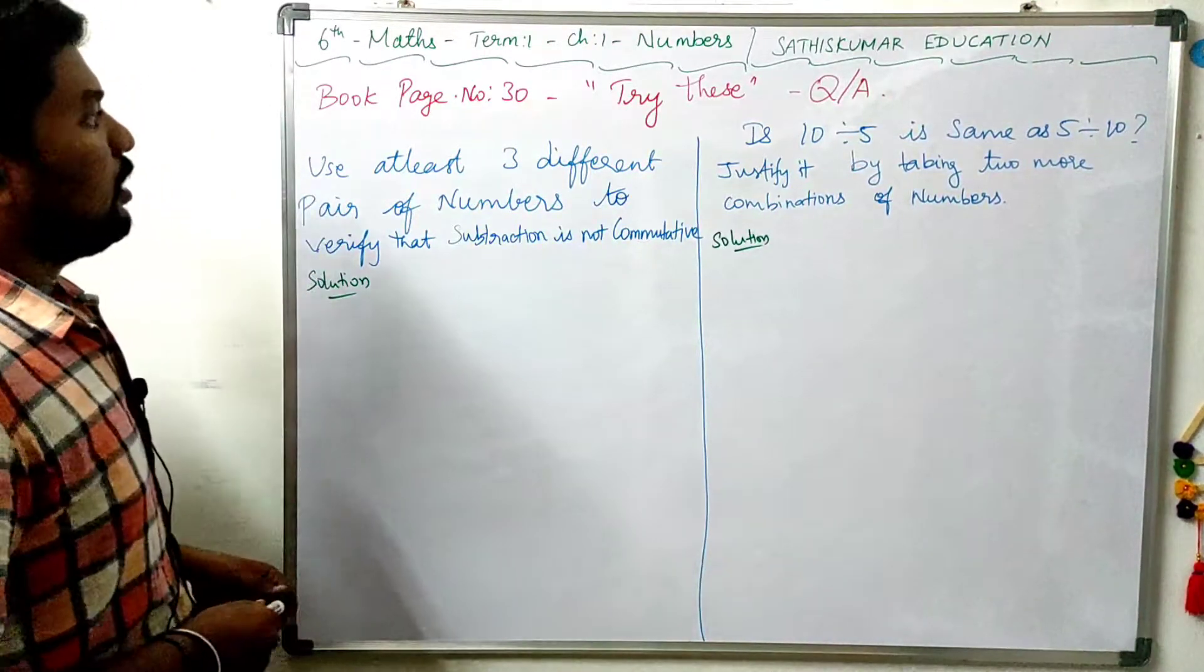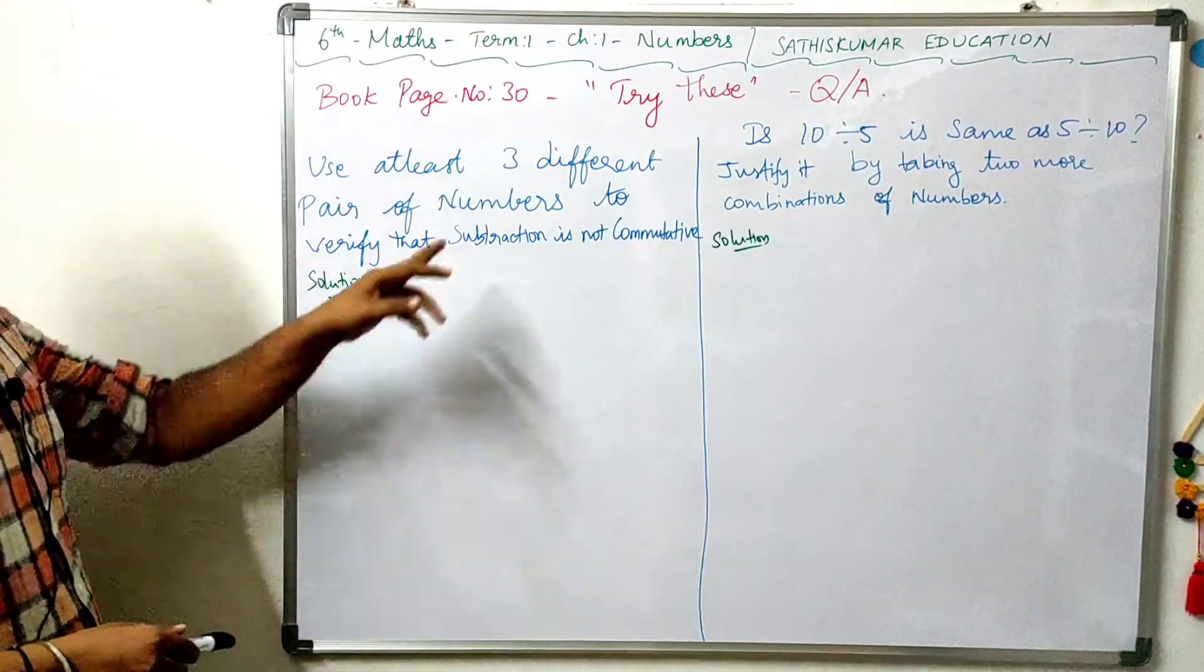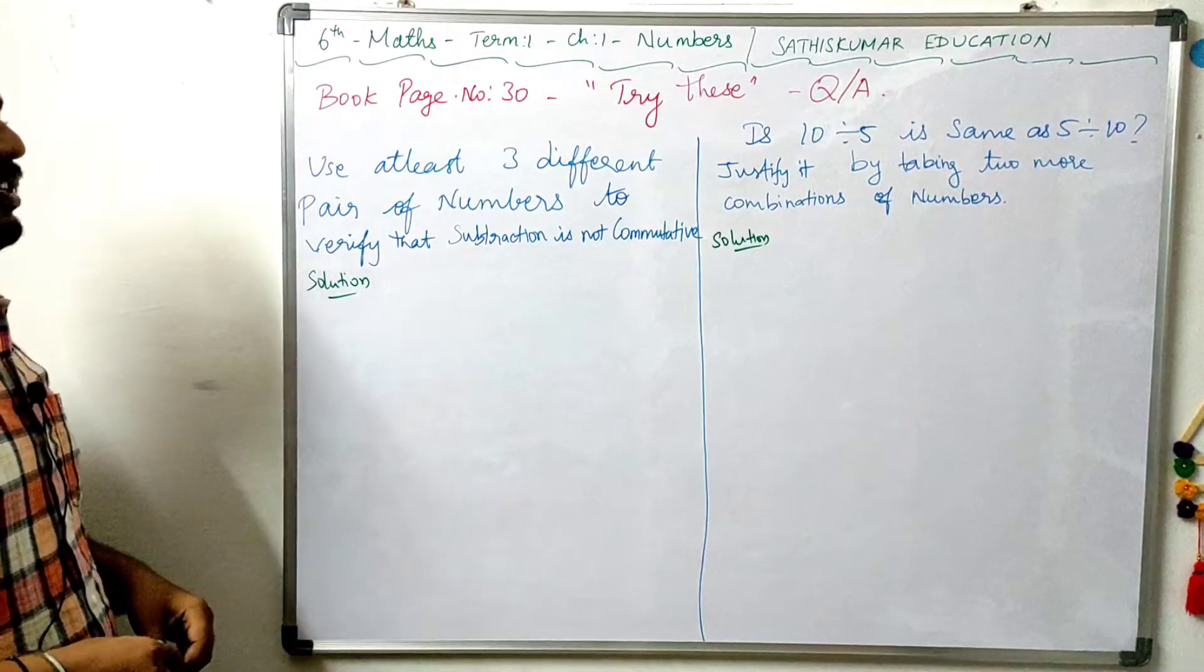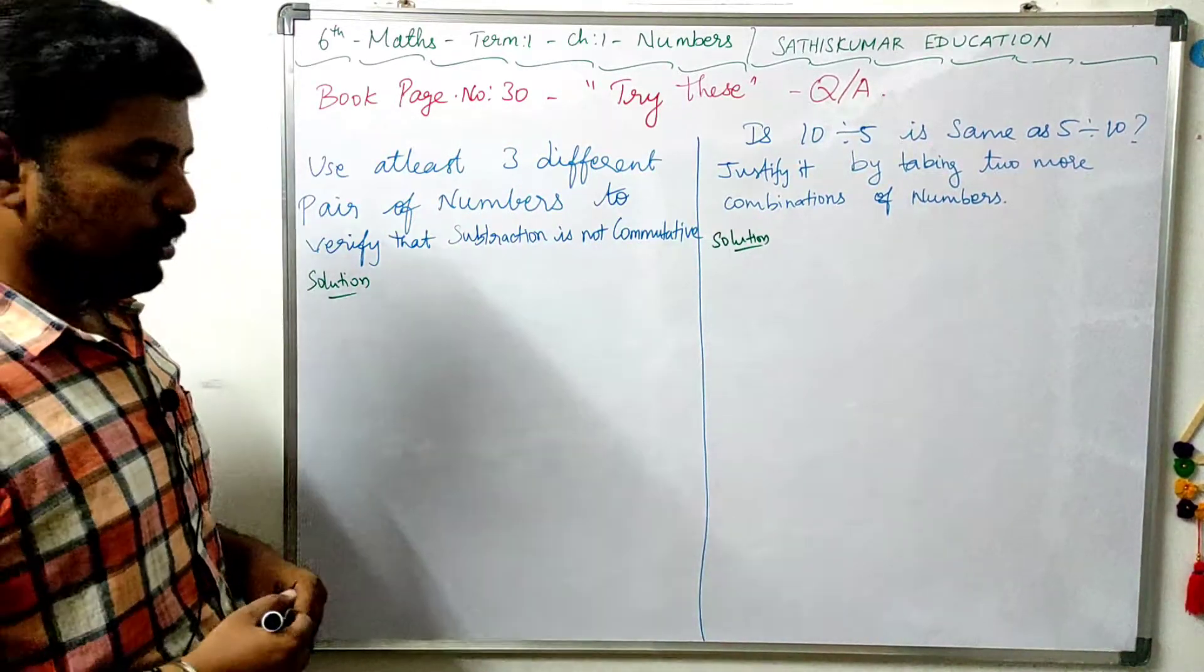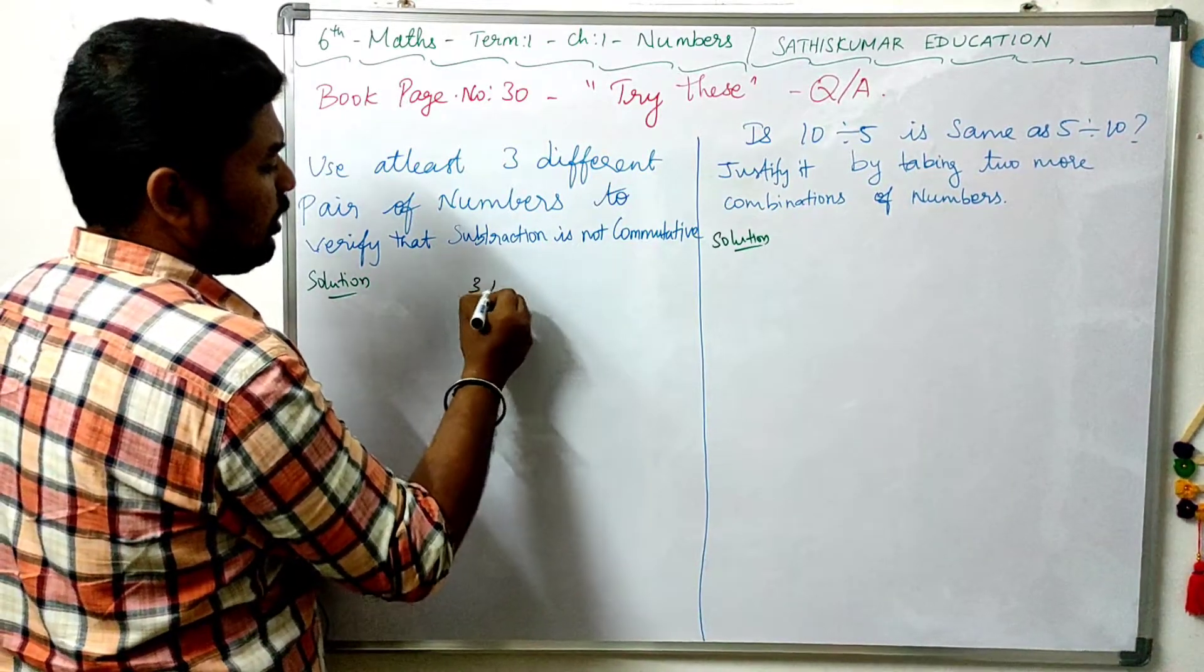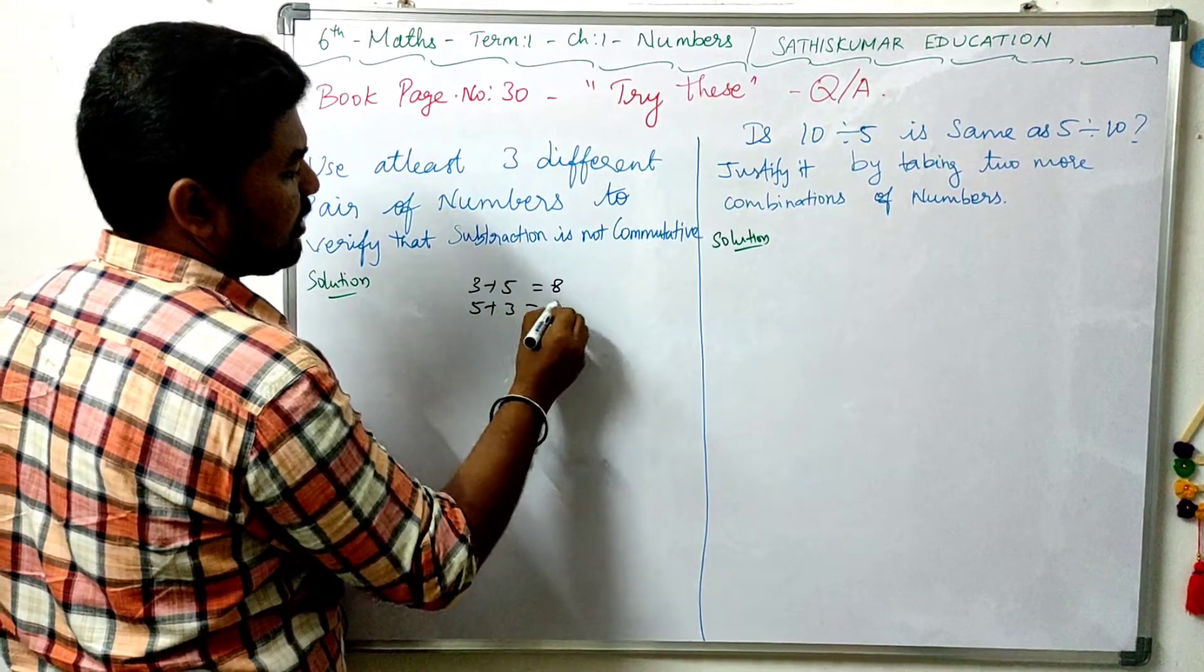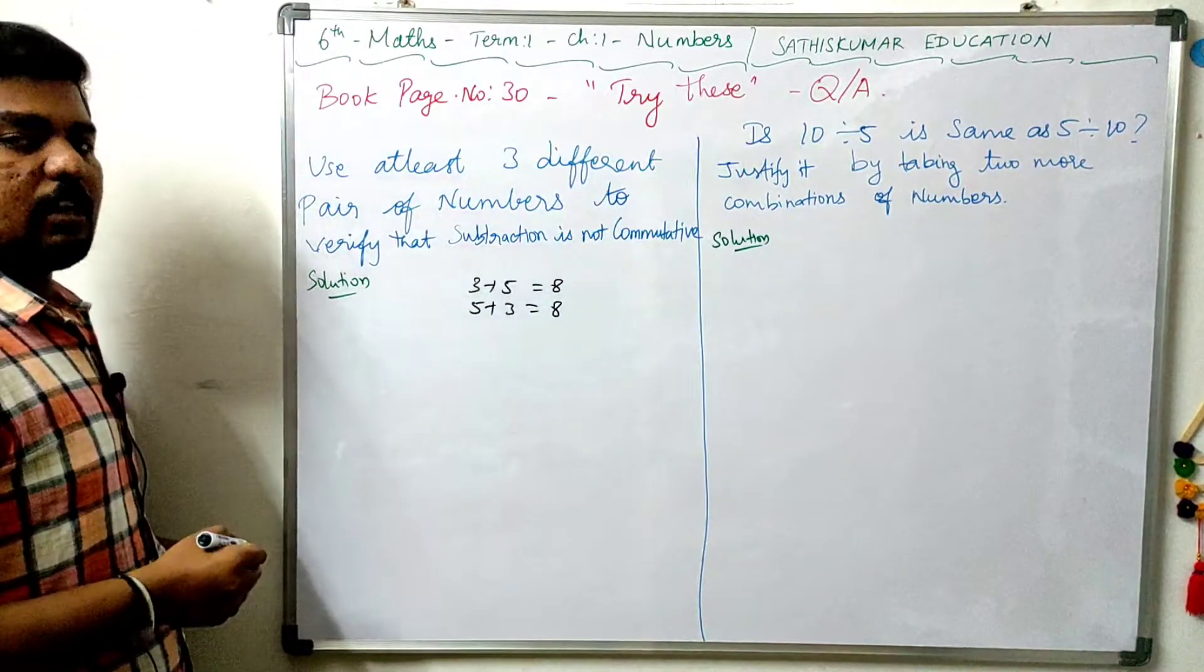First one: Use at least 3 different pairs of numbers to verify that subtraction is not commutative. So what is the property? 3 plus 5 is answer 8. 5 plus 3 is answer 8. This property is called commutative property.